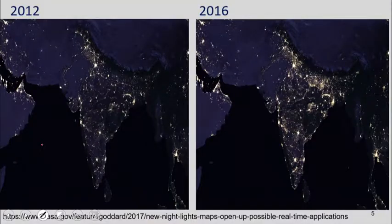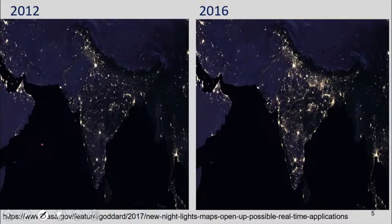We tried to use night lights data to get better and more high-frequency information on state-level performance. Given that the data come with a two-to-three year lag and we don't know how reliable the state-level data are, we tried to see whether night lights data fitted state-level data. We were a little bit disappointed. If you're going to use night lights data to do research, I would be cautious — there are lots of issues with this data.